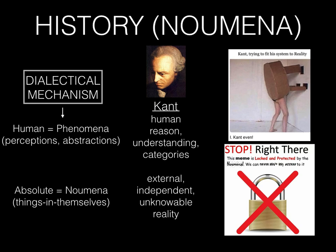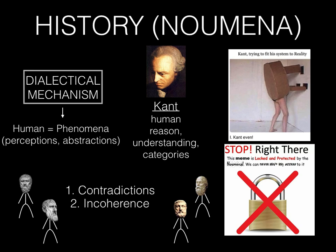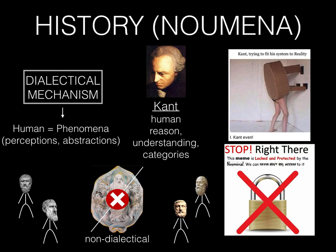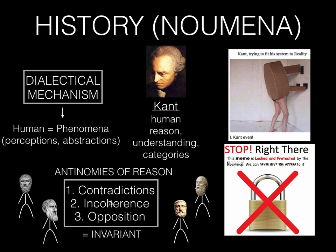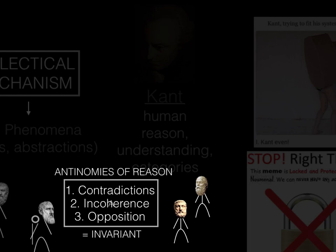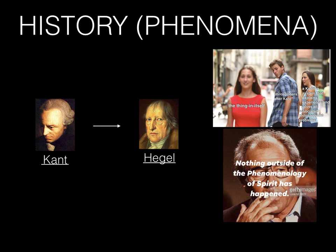Thus, this brings us back to the fact that dialectics focuses on contradictions, incoherence, and opposition of our knowledge. Our knowledge gives us no access to the absolute reality as it is in itself, but rather just to the way in which we perceive and abstract this reality. What we perceive and abstract of this reality is historical. But what is invariant of these perceptions and these abstractions are the antinomies of reason — in other words, the contradictions, the incoherence, and the opposition. That is all that is invariant to the historical process. From this understanding, we reach an incredibly important turning point in the history of philosophy between the work of Immanuel Kant and the work of Georg Hegel.